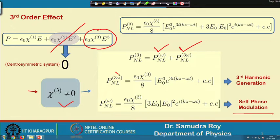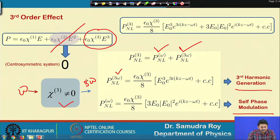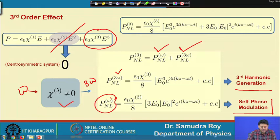The omega component leads to self-phase modulation, while the 3-omega component leads to third harmonic generation. When the nonlinear polarization vibrates at 3-omega frequency, it generates an electric field at 3-omega. So if we launch frequency omega, at the output we can expect 3-omega. Like second harmonic generation, the phase matching condition needs to be satisfied for third harmonic generation. Self-phase modulation automatically satisfies phase matching since the electric field vibrates at the same frequency omega with the same wave vector k.